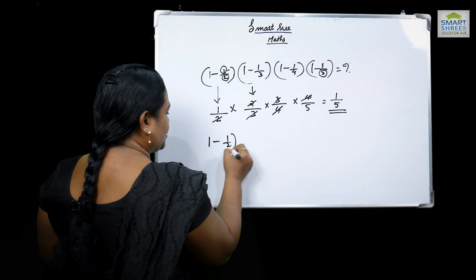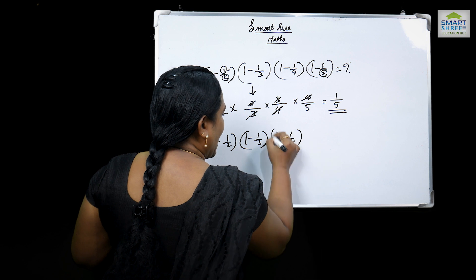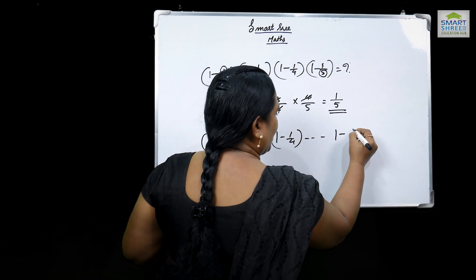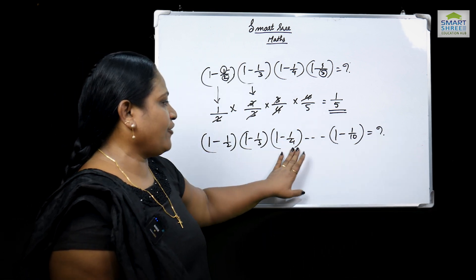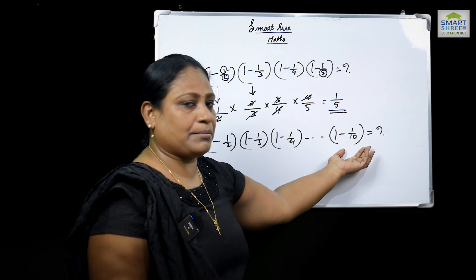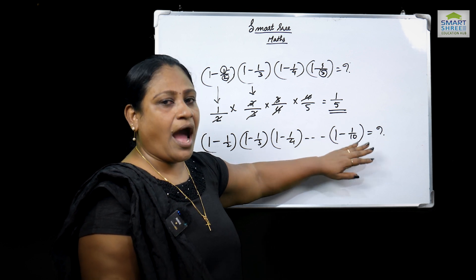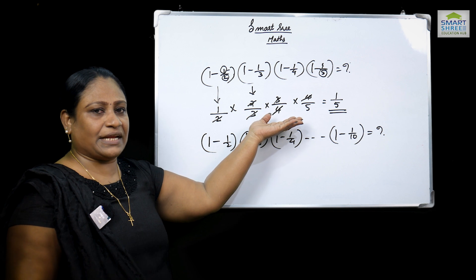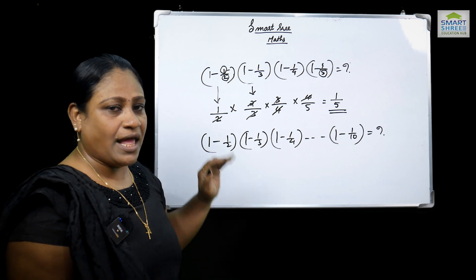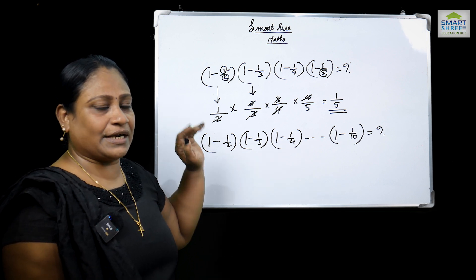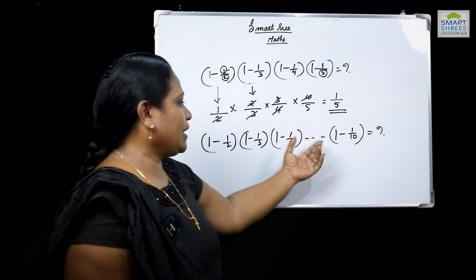If the pattern continues as 1 minus 1 by 2, into 1 minus 1 by 3, into 1 minus 1 by 4, and goes on to 1 minus 1 by 10 — using the same solution, the series continues as 2, 3, 4, 5, and the last number given is 10. The answer is 1 minus 1 by 10, which is 9 by 10... actually the answer pattern gives us 1 by 10.